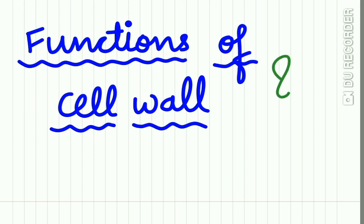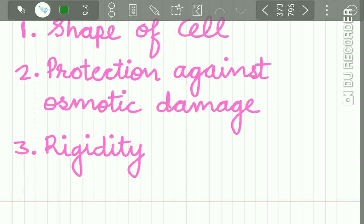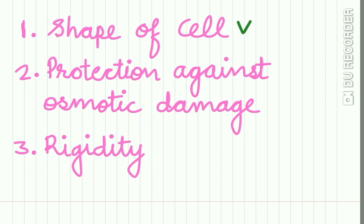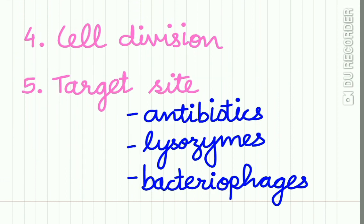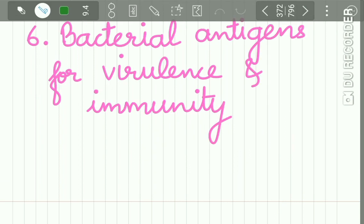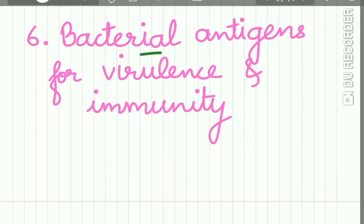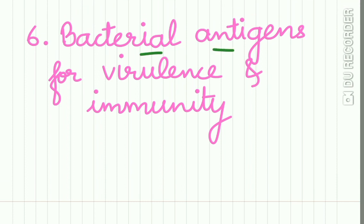Now let us see what are the functions of the cell wall. First, the cell wall accounts for the shape of the cell. Second, it provides protection against osmotic damage. Third, the cell wall confers rigidity to the bacteria. Fourth, the cell wall helps in taking part in cell division. It also possesses target sites for various antibodies, lysosomes, and bacteriophages. These cell walls carry bacterial antigens which are responsible for virulence and immunity.